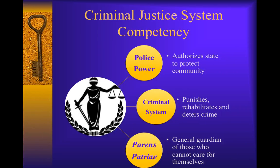Let's move to talking about competency in the criminal justice system. The authority of the government originates from three places: the police power, which authorizes the state to protect the community and incarcerate individuals who commit crimes; the criminal justice system, whose goal is to punish, rehabilitate, and deter crime; and parens patriae, which appoints the state to be the general guardian of those who cannot care for themselves — originally reserved for children, the mentally retarded, and the insane — dealing with the safety and needs of the individual rather than society as a whole.